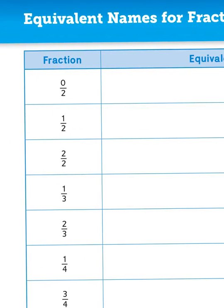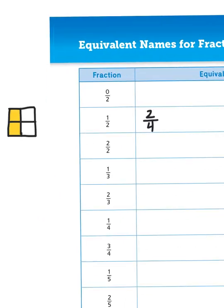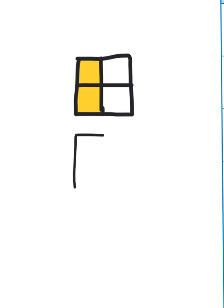So off here in the sides I can write the fraction 2 over 4 — 2 fourths. Now let's look at that model again. This time I'm going to draw another one.